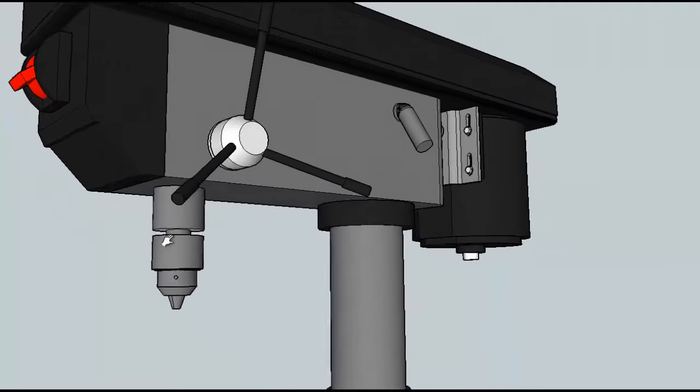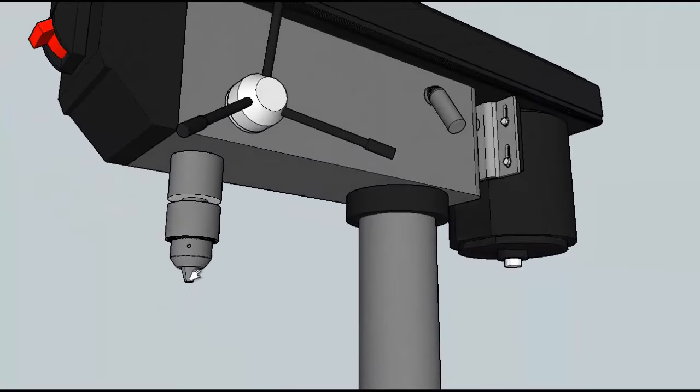Next we'll take a look at the spindle. Now the spindle is not this part down here. This is called the chuck. The spindle runs from here. It's the spinning shaft that goes all the way up and connects to that pulley up in the top of the head.